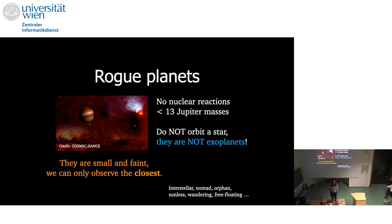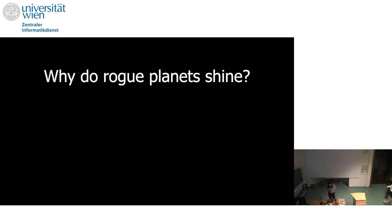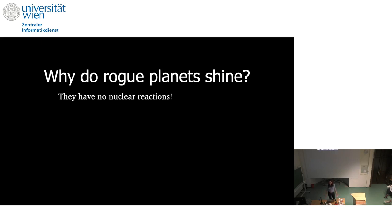We will only be able to observe these rogue planets that are very close to us, where they are still relatively bright. So why do you think rogue planets shine? We said that stars shine because of nuclear reactions, but rogue planets don't have nuclear reactions. Is there any guess?